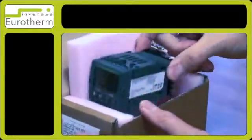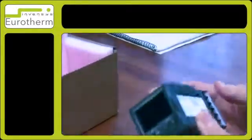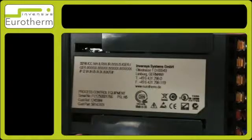Now take the instrument out of the box. Removing the instrument, you can see the label on the side of the box. Just check to make sure the coding is correct for your application.